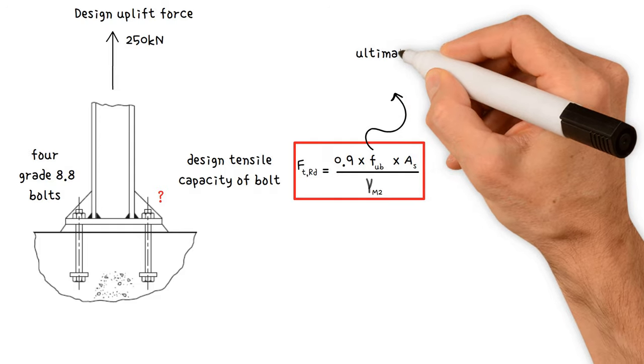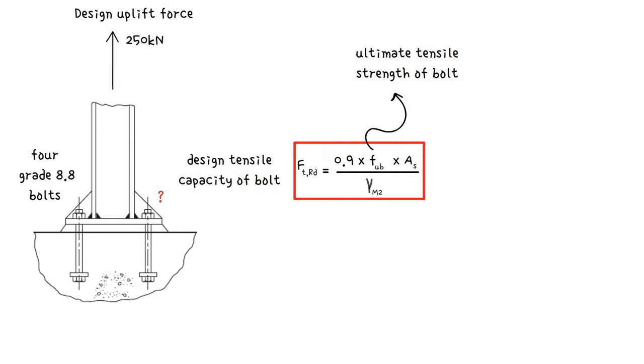FUB is the ultimate tensile strength of a bolt. The two commonly used grades are 4.6 and 8.8. Grade 4.6 bolts are common mild steel, and sometimes referred to as black bolts. Grade 8.8 bolts are higher in strength.